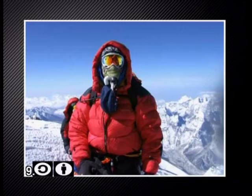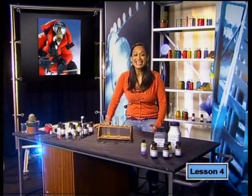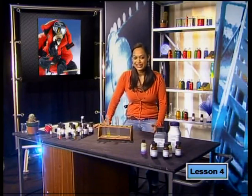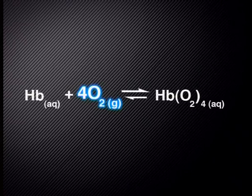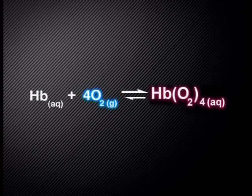This reduces the amount of oxyhemoglobin, and a new equilibrium is established. When oxyhemoglobin concentration reduces, climbers don't get enough oxygen to all parts of their bodies and may feel lightheaded. They need to put on oxygen masks to increase the amount of oxygen to the lungs. This increase in oxygen concentration causes the system to favor the forward reaction, producing more oxyhemoglobin.